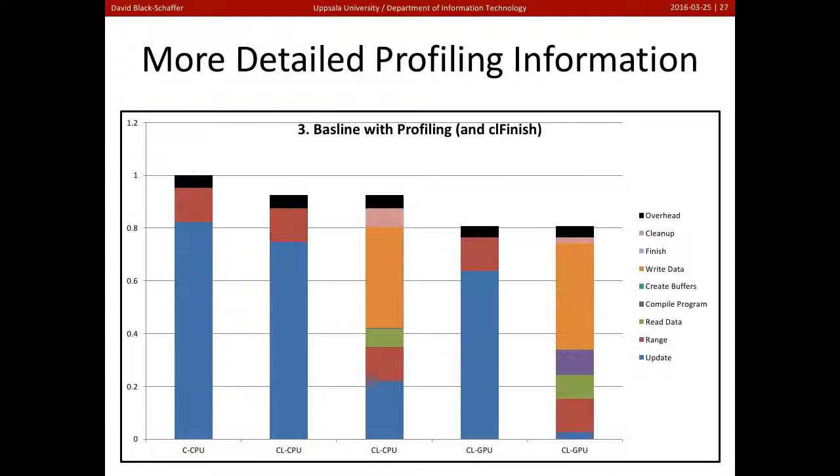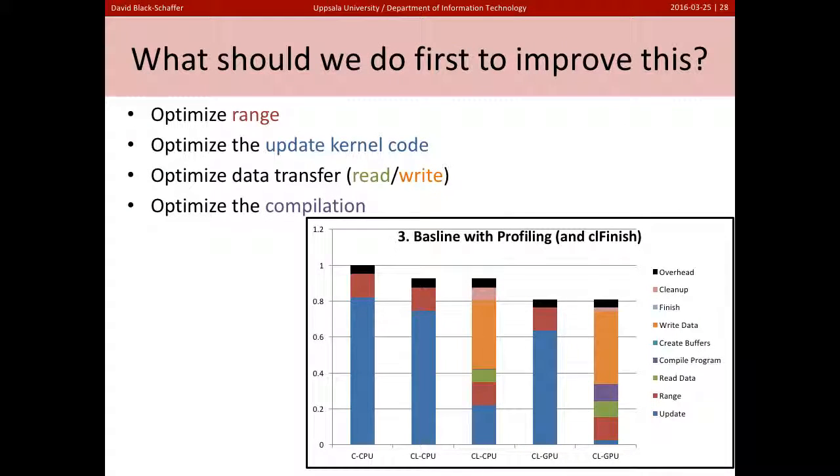Now let's take a look at the high-level optimizations we need to do for this program based on our profiling information. Here's the more detailed profiling information we get when we force OpenCL to finish after each command. We can now see how we're actually spending time. So if we take a look at this data, what should we do first to improve it?